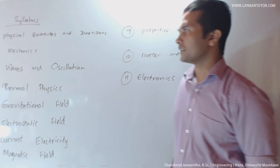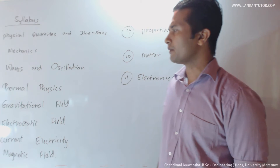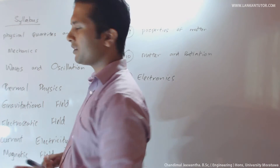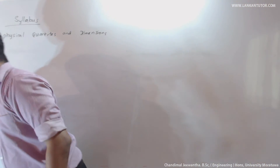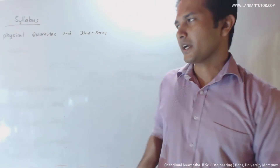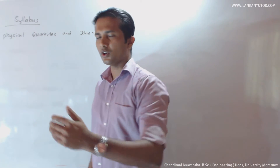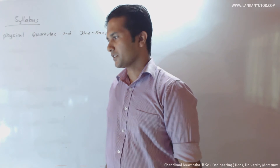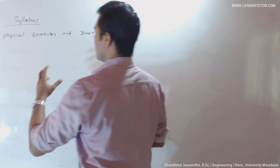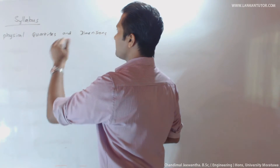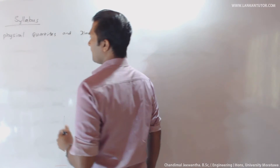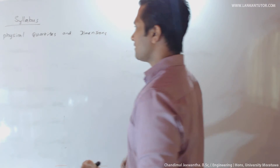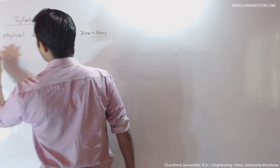We will now go through the first lesson, that is physical quantities and dimensions. In order to get an idea about science, we have to go through the basic physical quantities. There are seven basic physical quantities.